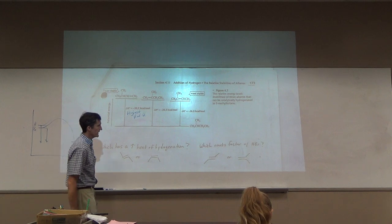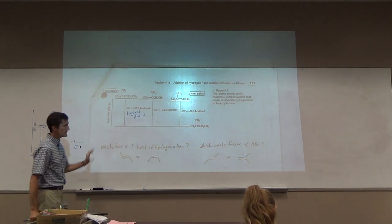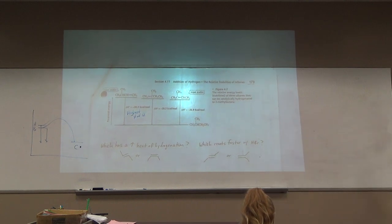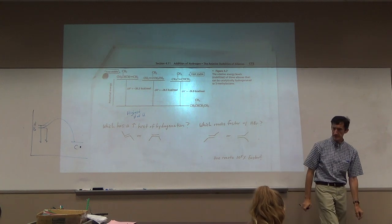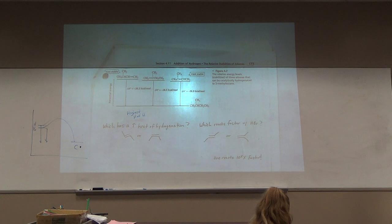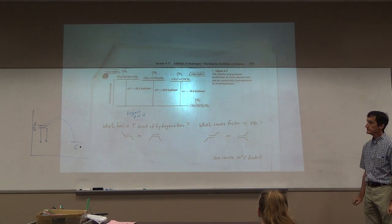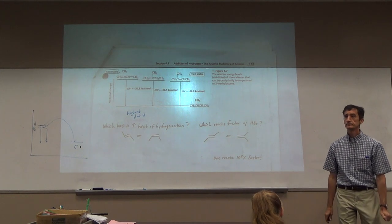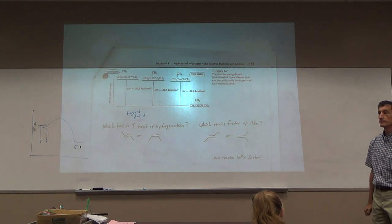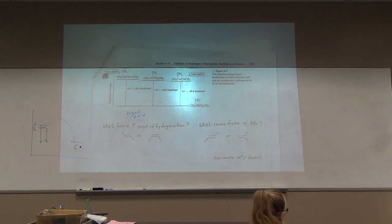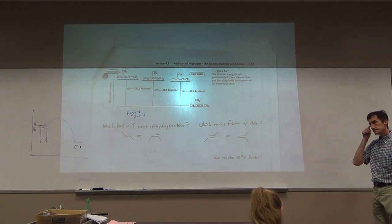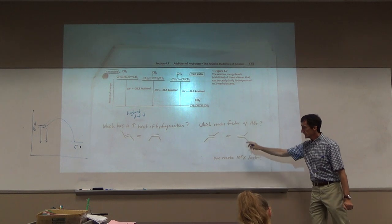While we're at it, we can answer questions like: which reacts faster with HBr? Not related to hydrogenation - totally different type of question. This is a little bit apples to oranges. But one of these alkenes reacts 100,000 times faster with HBr than the other. Which one reacts faster? The one on the right. Why the one on the right? Tertiary carbon - when this reacts it's going to form a tertiary carbocation. The other would form a secondary carbocation. The tertiary carbocation is much easier to form.